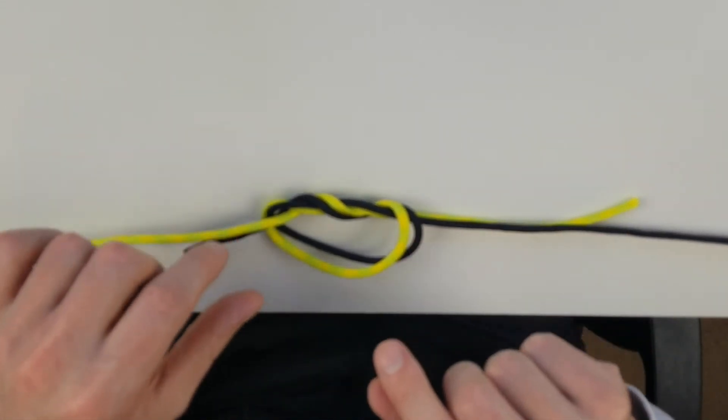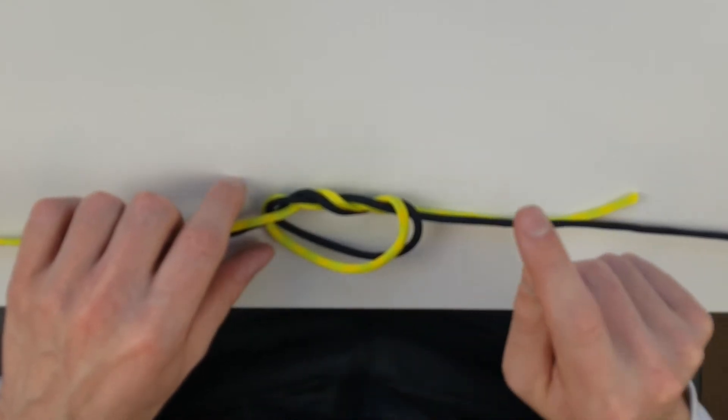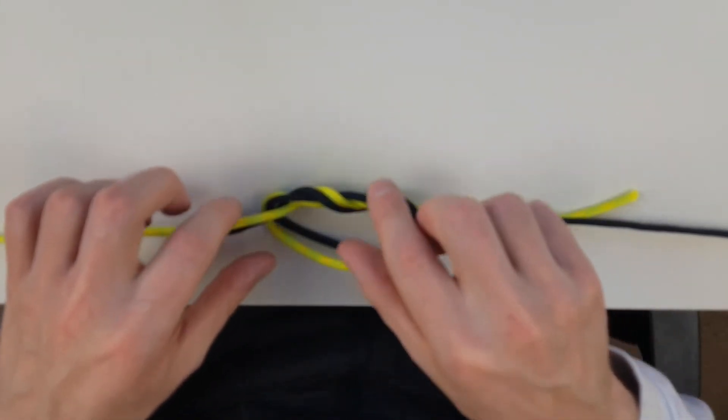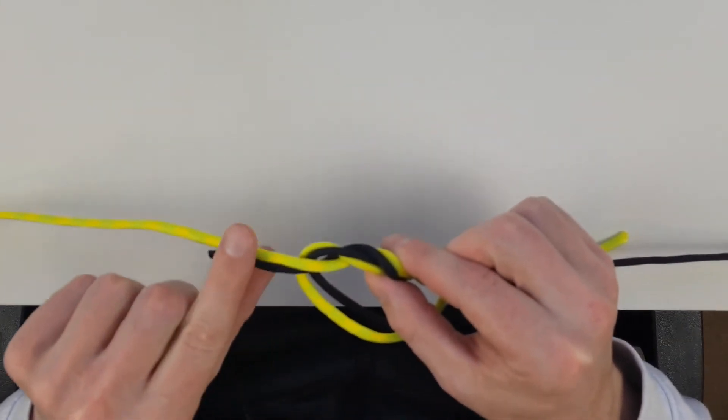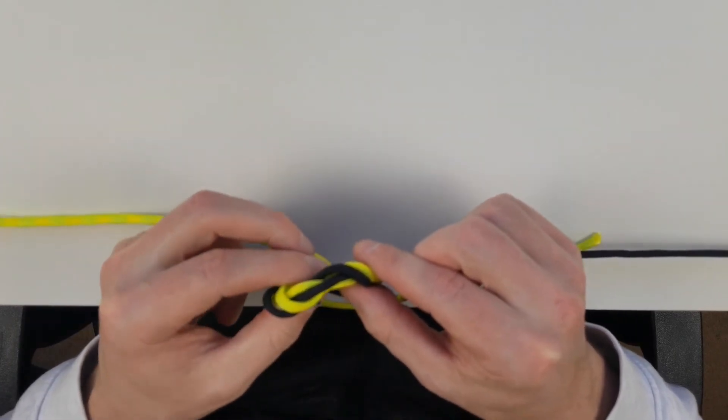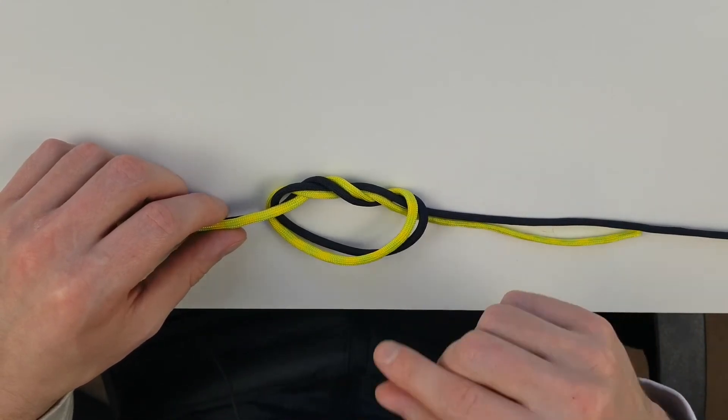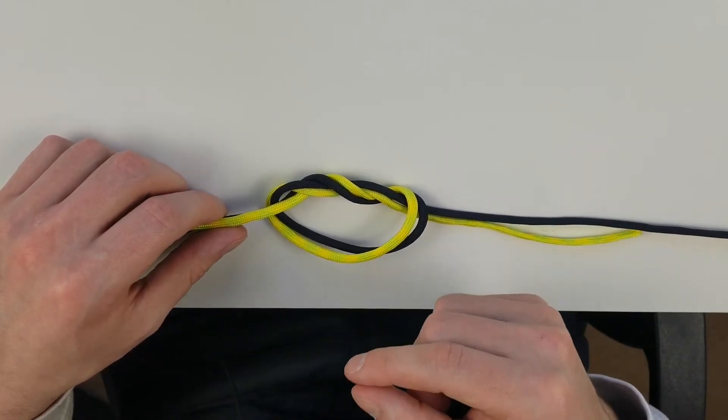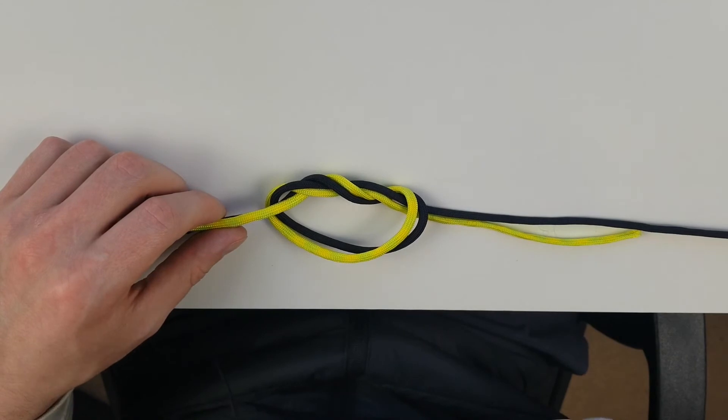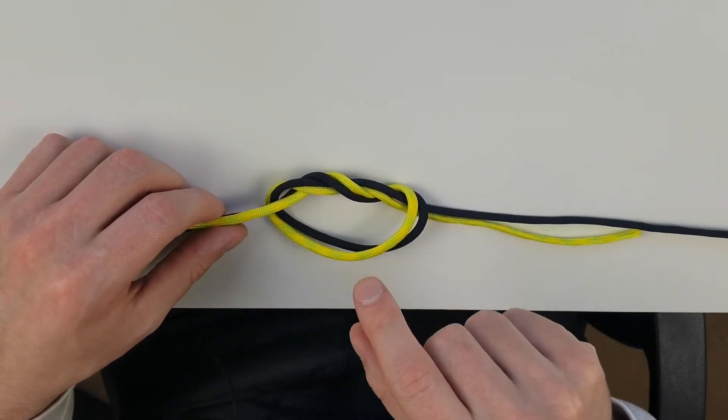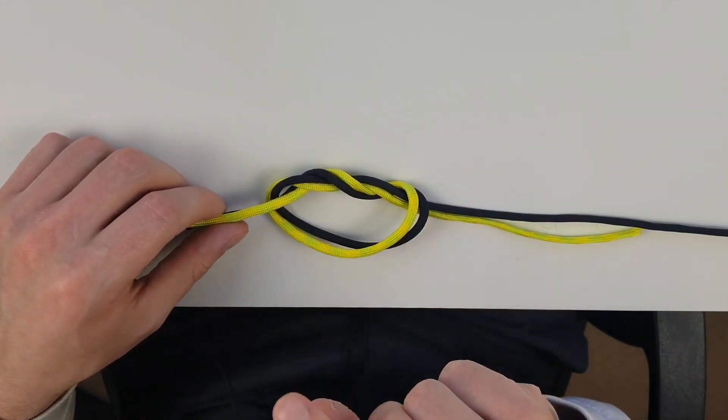I will mention though, if you want to tie a triple surgeon's knot which is going to be a bit stronger, all you have to do is grab these lines and wrap them through one more time. I generally like doing that whenever I'm using lighter line. If you are using a thicker line then it can get a little bit bulkier, so if you're using thicker line just do two, if you're using thinner line do three.